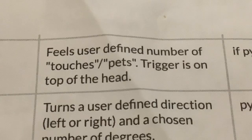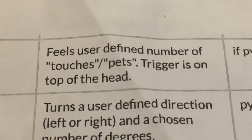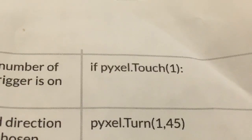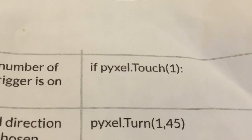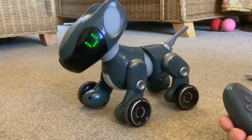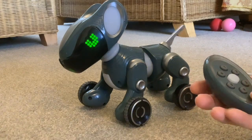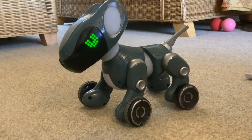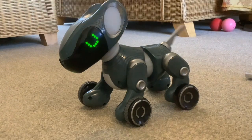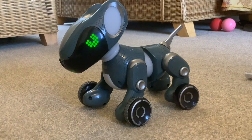The next command is touch — feels a user-defined number of touches or strokes, and the trigger is on top of the head. The Python code is if pixel.touch(1), meaning touch once, but you could set that to five or ten. There's a colon here because it's conditional. I've just put in wag, so that's number four. Now you've got to touch his head, and he wags his tail.